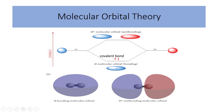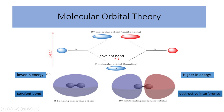Bonding molecular orbitals are lower in energy than the original atomic orbitals, promoting electron density between the bonding atoms. This electron density creates a shared region known as a covalent bond, which holds the atoms together. Conversely, antibonding molecular orbitals are higher in energy and result from destructive interference between the atomic orbitals, leading to regions of electron density that weaken the bond between the atoms.